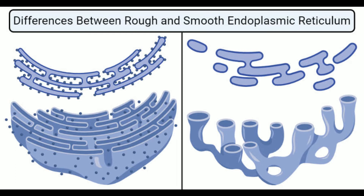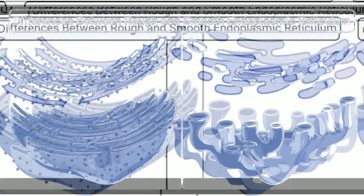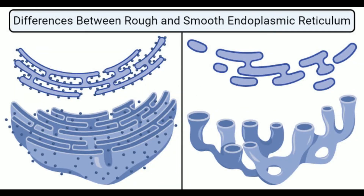In the endocrine system, smooth ER is also responsible for the synthesis of steroid hormones from cholesterol. In the liver, it produces enzymes that catalyze reactions responsible for the removal of drugs, metabolic waste, and harmful chemical substances. The dynamic structure of SER enables it to accumulate large quantities of harmful chemicals during detoxification. SER is thus essential for the detoxification of chemicals. Besides, smooth ER also contains the enzyme glucose-6-phosphatase, which is important for the conversion of glycogen to glucose.